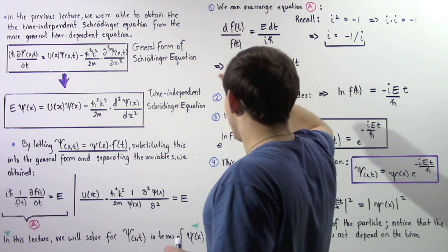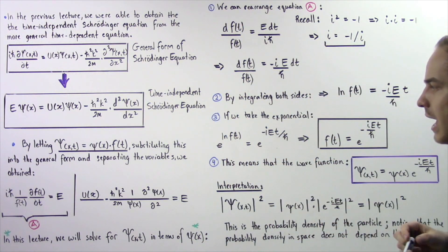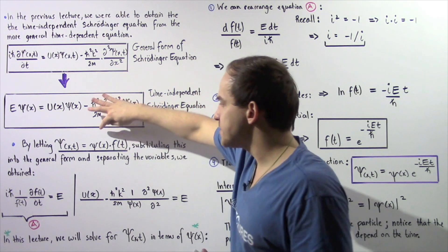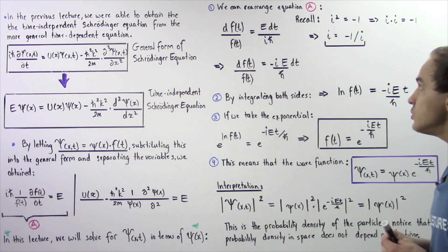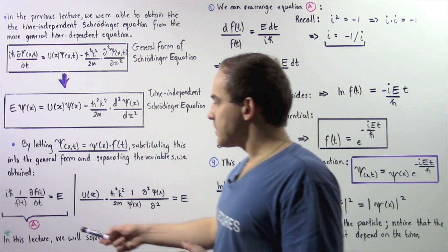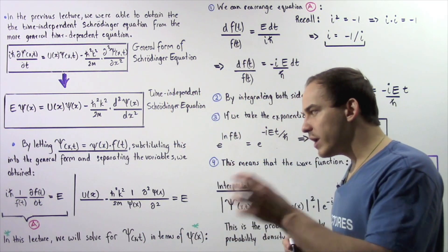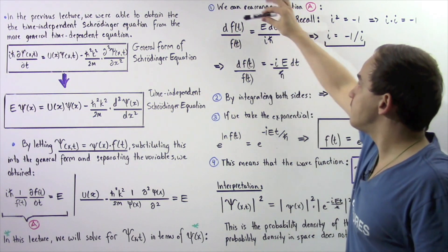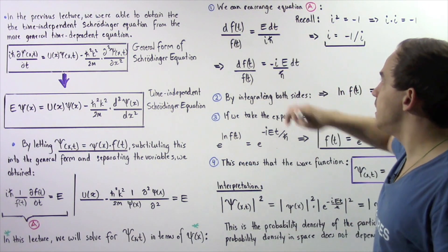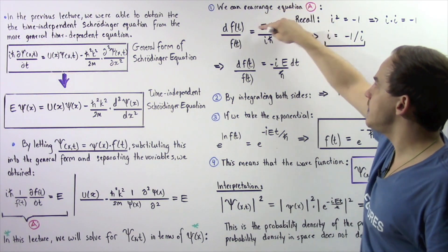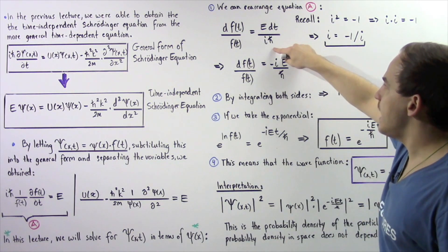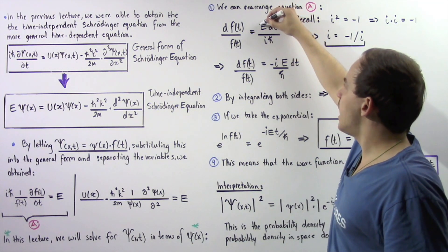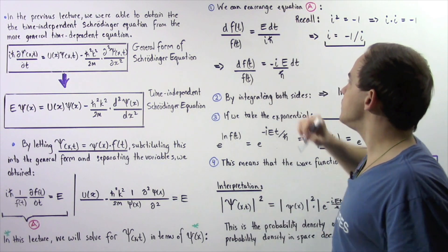Let's begin with step one. We have four steps to follow to determine an equation for our total wave function with respect to our wave function. Starting with equation A, we rearrange it as follows: the left side becomes df(t) divided by f(t), equal to E multiplied by dt divided by i multiplied by h-bar. We now want to bring the i to the numerator.